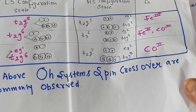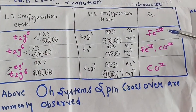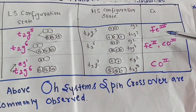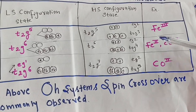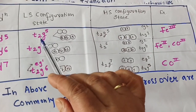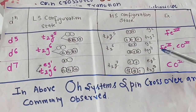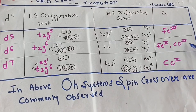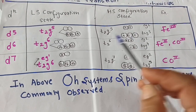The metal ions that most commonly show spin crossover behavior are iron(III) in d5 configuration, iron(II), cobalt(III), and cobalt(II).